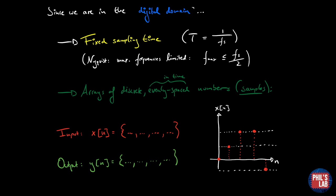Since we are in the digital domain we are working with a fixed sampling time which I'll call capital T which is related to the sampling frequency as 1 over fs. According to Nyquist that means our maximum frequencies are limited such that the maximum frequency must be less than the sampling rate over 2. A second observation is that we now are working with arrays of discrete evenly spaced numbers and these are evenly spaced in time and we typically call these samples.